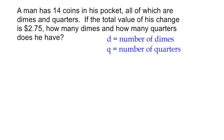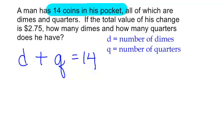So I need two equations. What facts do you know? I do know that he has 14 coins in his pocket, all of which are dimes and quarters. So I will let d plus q, my dimes plus my quarters, equal 14. This is not how much they're worth, just how many coins are in his pocket.